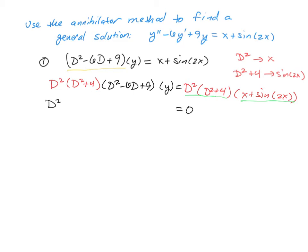So we're looking at d squared, d squared plus 4, d squared minus 6d plus 9, applied to y, equaling 0.